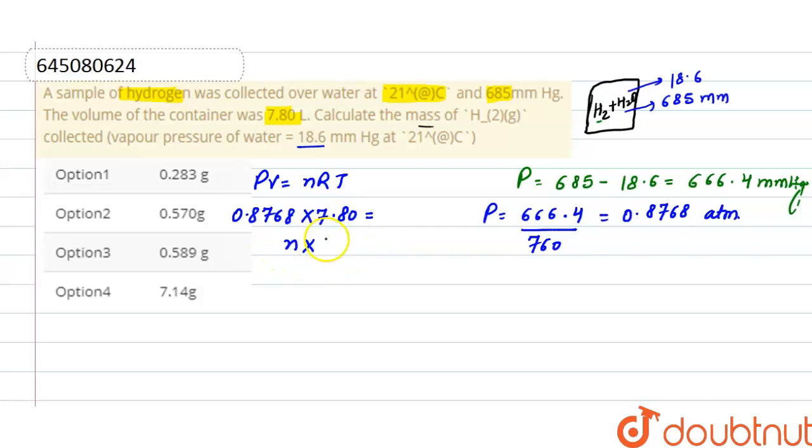n is the number of moles, gas constant is 0.0821 liter atmospheric per mole per Kelvin. Temperature here is given in degree Celsius, so we'll convert it into Kelvin by adding 273. So temperature here will be 294 Kelvin.